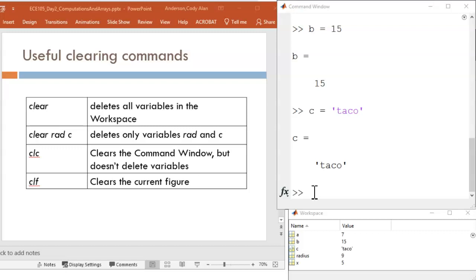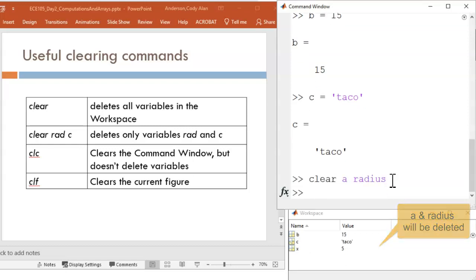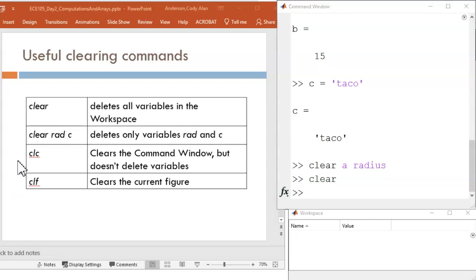Let's look at this in action in MATLAB. First, I'll clear only the variables A and RADIUS by specifying them. Now, I'll clear everything in the workspace. CLC wipes clean the command window and gives you a blank slate, but it does not impact the variables in the workspace.